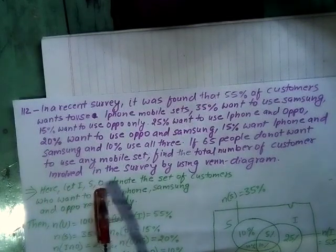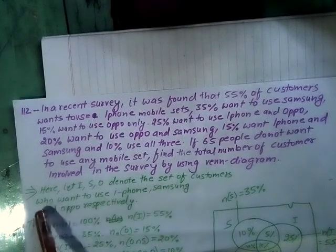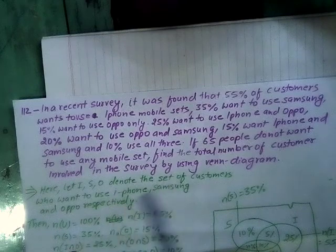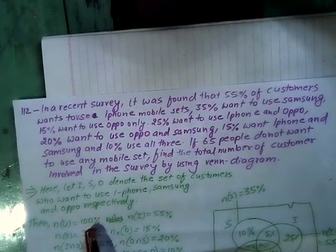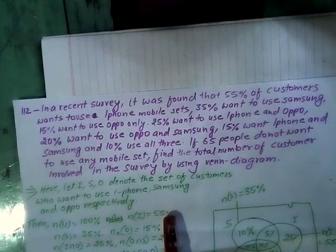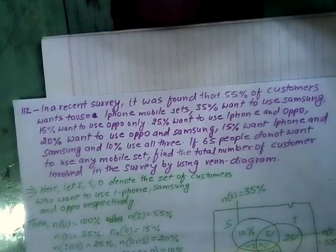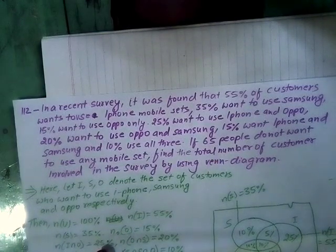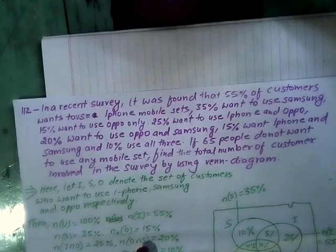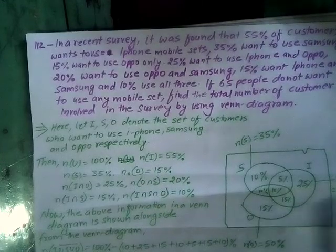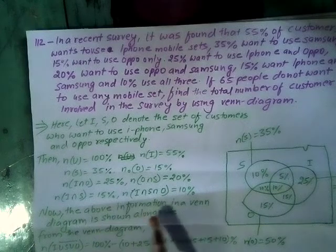Let I, S, and O denote the set of customers who want to use iPhone, Samsung, and Oppo respectively. Then: NU = 100%, NI = 55%, NS = 35%, NO = 15%. I intersection O = 25%, O intersection S = 20%, I intersection S = 15%, and I intersection S intersection O = 10%.